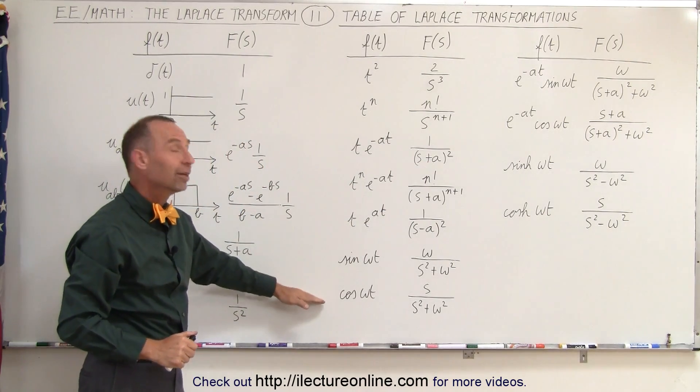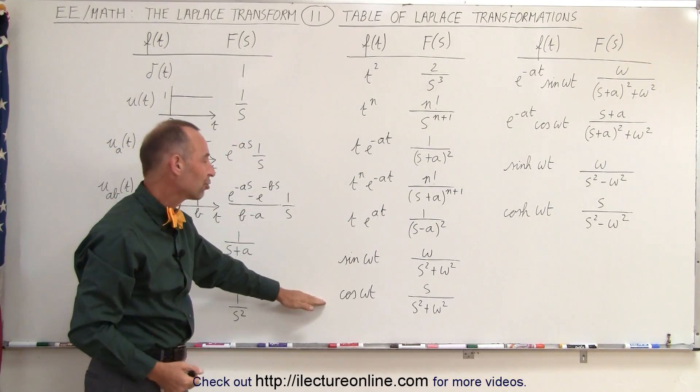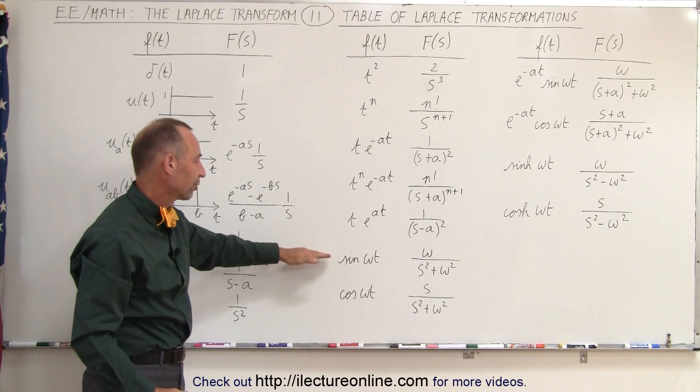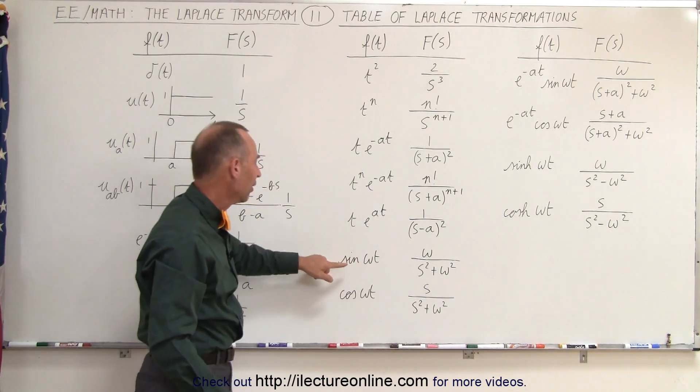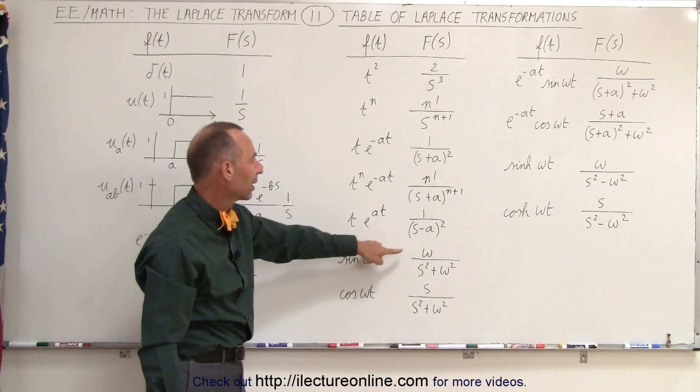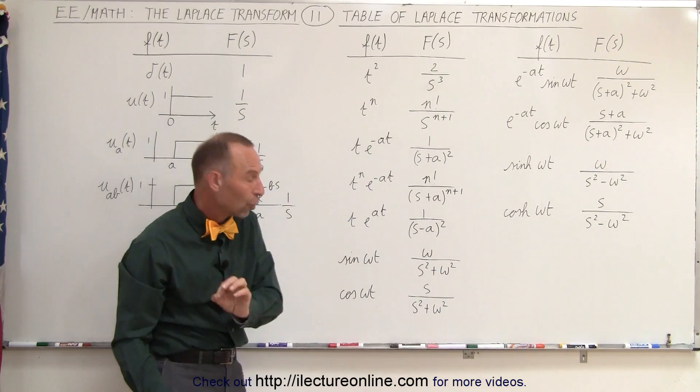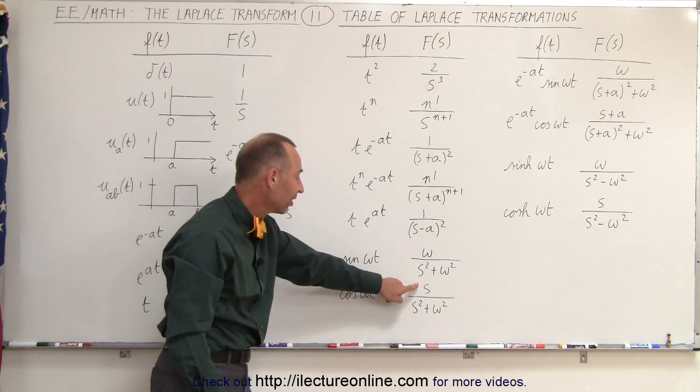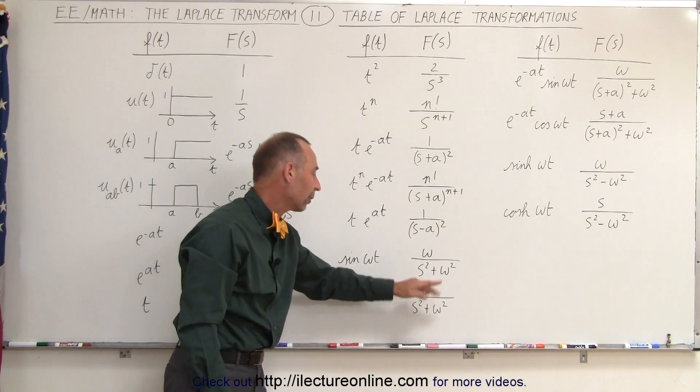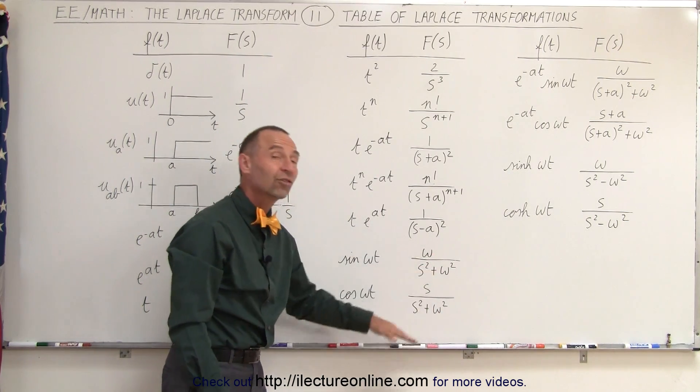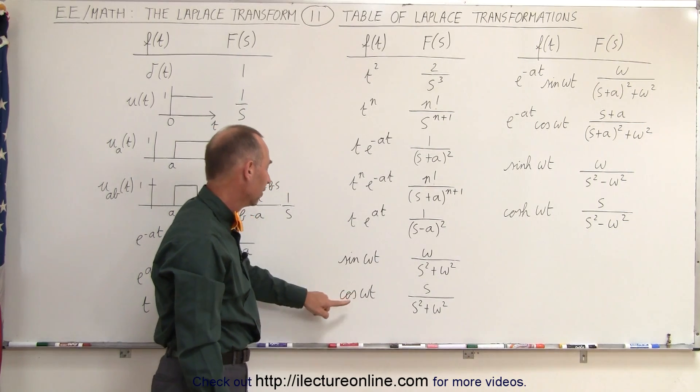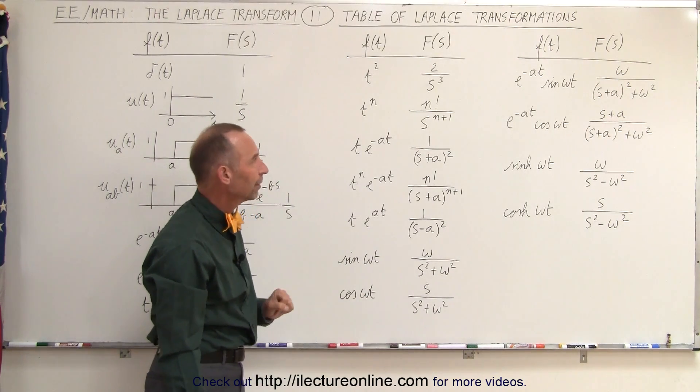The sine ωt and the cosine of ωt are very common transforms, so when we transfer from the time domain to the frequency domain, for the sine of ωt, notice we get ω divided by (s squared plus ω squared). But for the cosine, it's s divided by (s squared plus ω squared). Notice that the denominators are the same, but for the sine we get ω in the numerator, for the cosine we get s in the numerator.